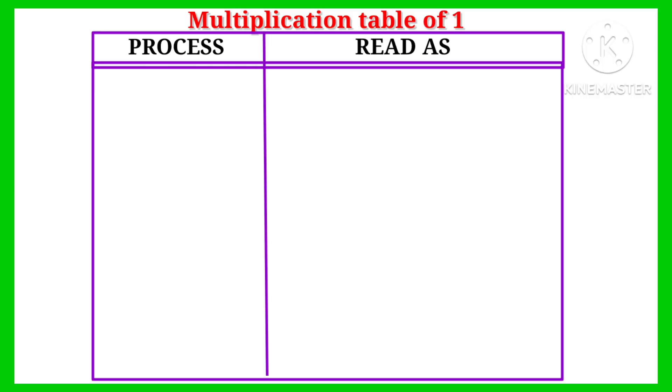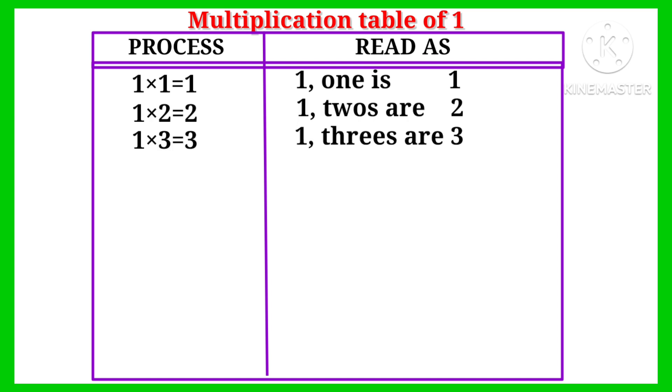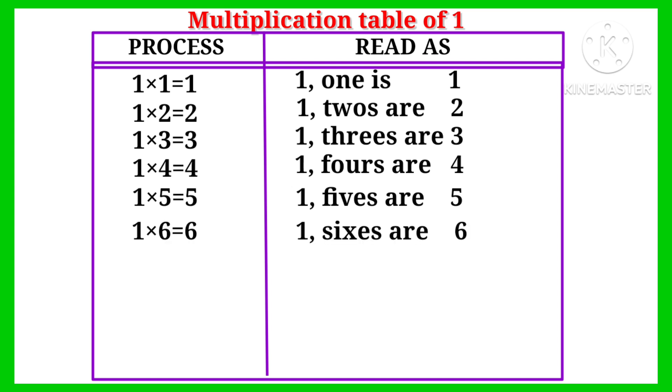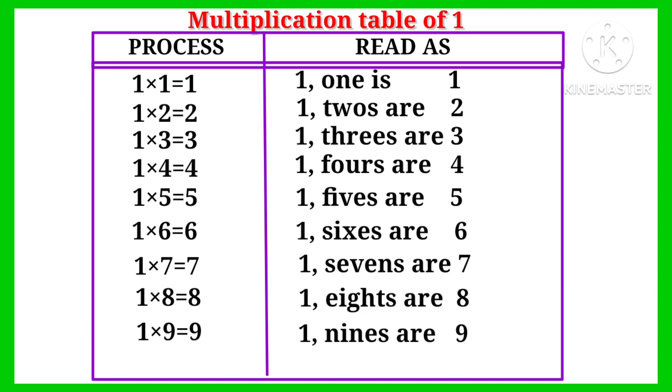Multiplication table of one: one one is one, one twos are two, one threes are three, one fours are four, one fives are five, one sixes are six, one sevens are seven, one eights are eight, one nines are nine, one tens are ten.